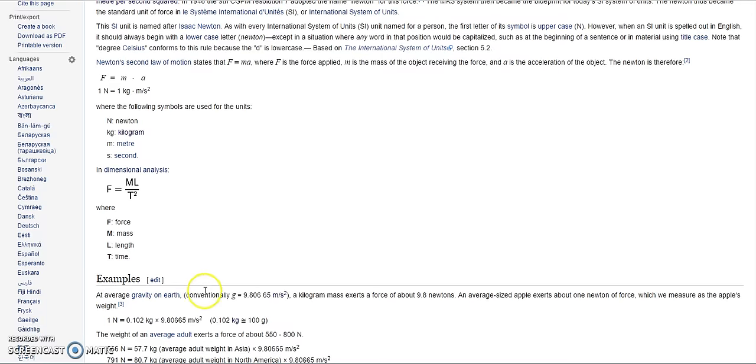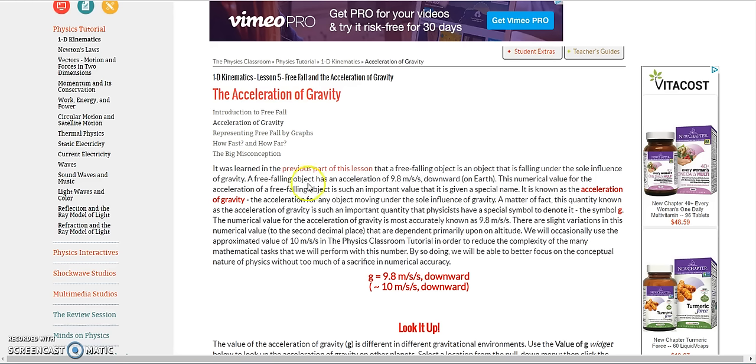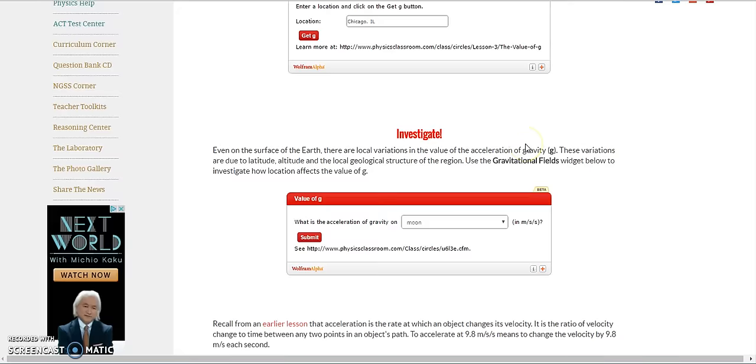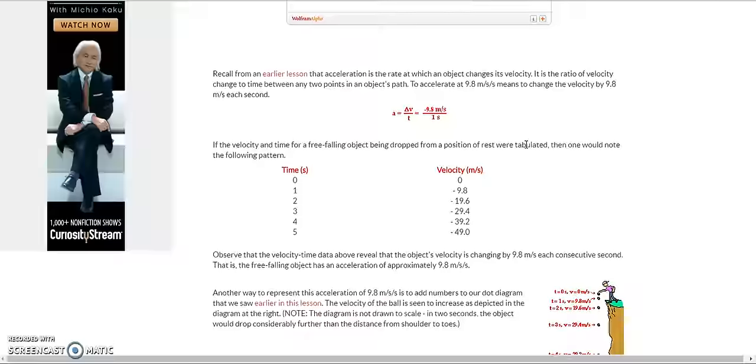So here it says the average gravity on Earth conventionally G equals 9.8 meters per second squared. A kilogram mass exerts the force of about 9.8 Newtons. Now, where have we heard 9.8? Well, 9.8 is a free-falling object acceleration, 9.8 meters per second squared. They named this deceleration of gravity, but all it is, is deceleration. Like I said, they're putting a head on top of a head. It's a very blatant sham here because when we look at the velocity, we get the 9.8.